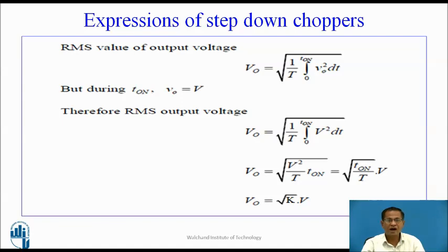Expression for RMS value of output voltage: V_0(rms) = √[(1/T) × integral from 0 to T_on of V_0² dt]. During T-on, input appears across the output, so V_0 = V. After solving, we obtain V_0(rms) = √K × V. This is the RMS value of output voltage.